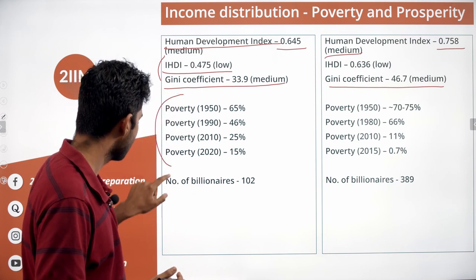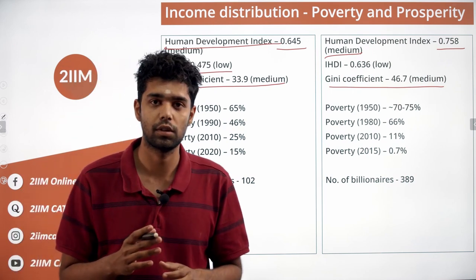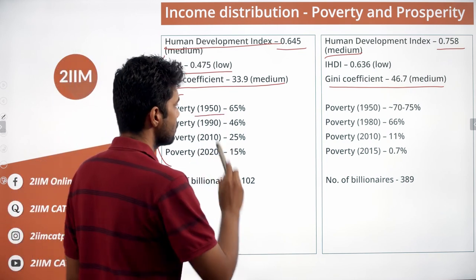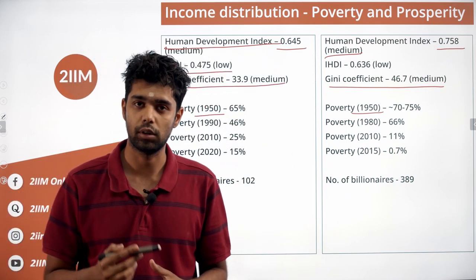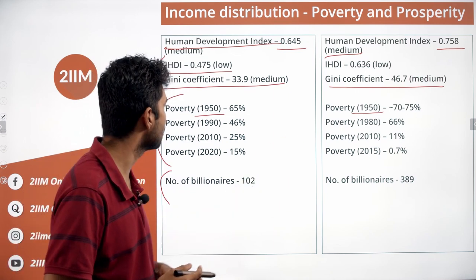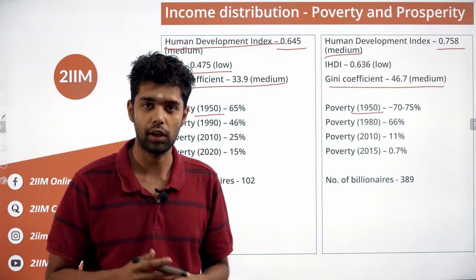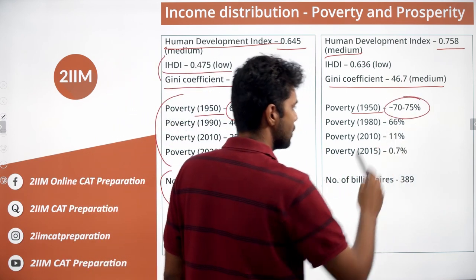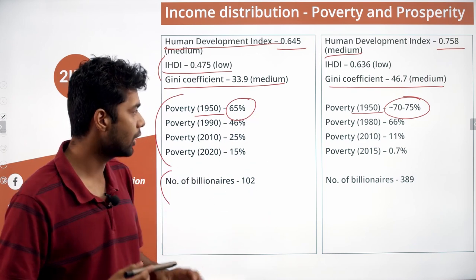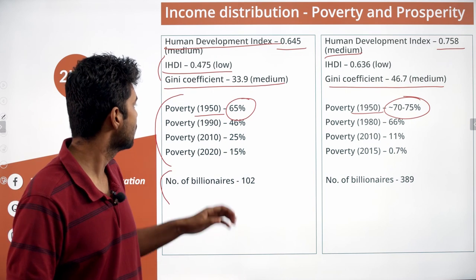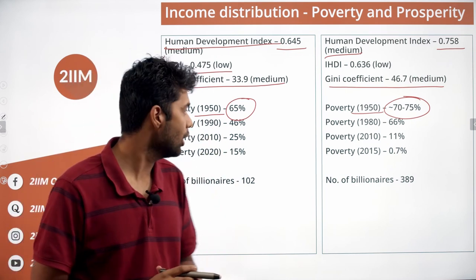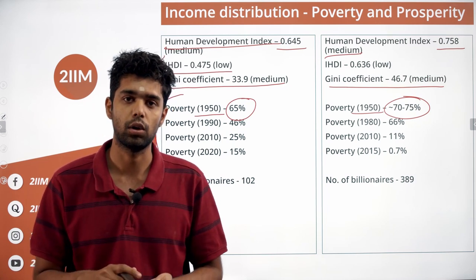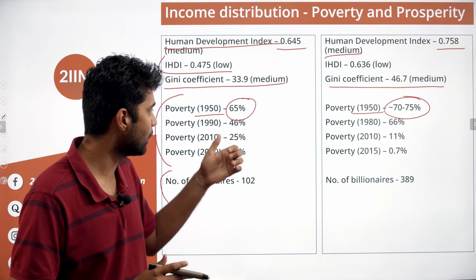Now we talk about poverty levels. Starting from 1950 — a major historical point for both countries — India's poverty rate was close to 65% and China's was around 70-75%. These numbers are approximate because poverty measurement is inherently difficult. The poverty line is not a very solid way to measure poverty, and there are many indices such as the multidimensional poverty index. The basic trend is what matters.